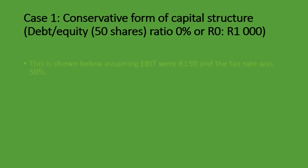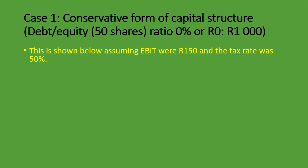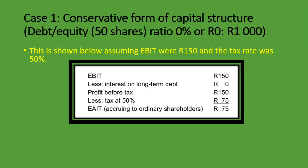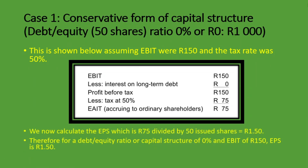This is shown below assuming earnings before interest and tax were R150 and the tax rate was 50% for simplicity. Earnings before interest and tax: R150. Less interest on long-term debt: zero, because we have no debt. Profit before tax: R150. Less tax at 50%: R75. Earnings after interest and tax — the net profit accruing to ordinary shareholders — is R75. Earnings per share is R75 divided by 50 issued shares, which gives us R1.50. Therefore, for a capital structure of 0% debt and EBIT of R150, earnings per share is R1.50.